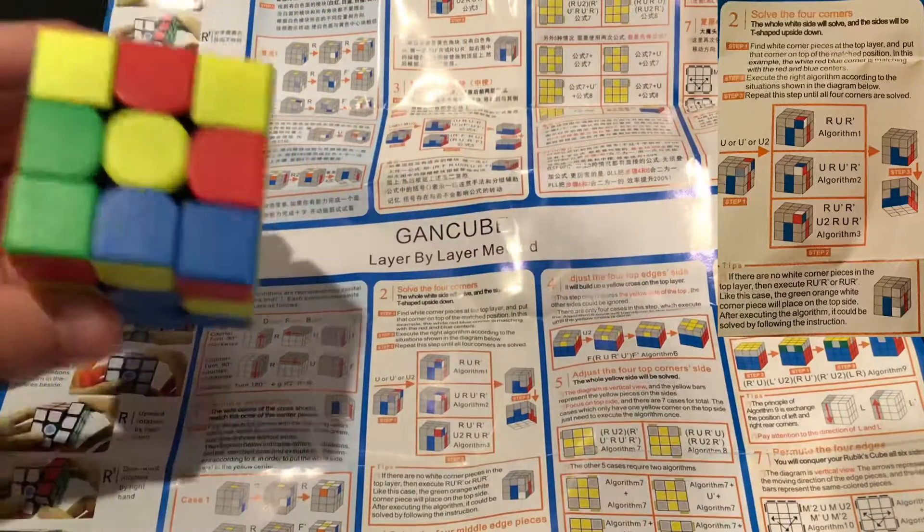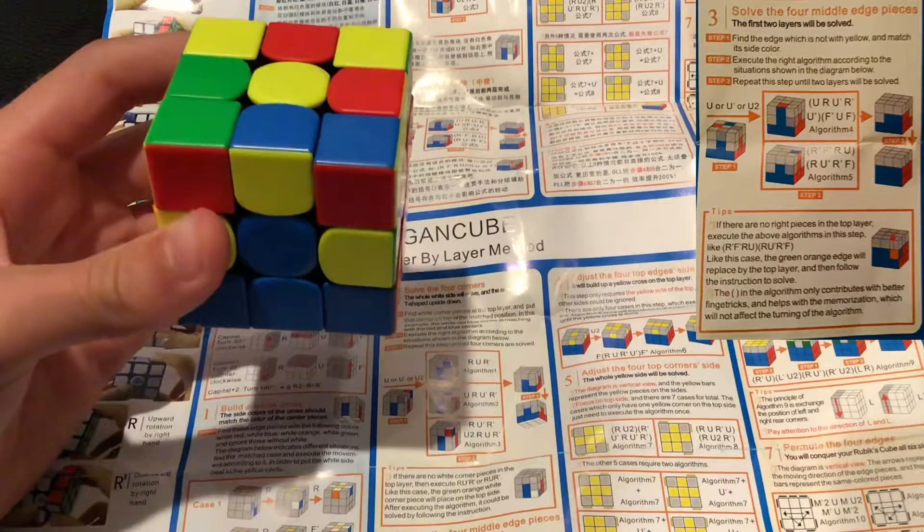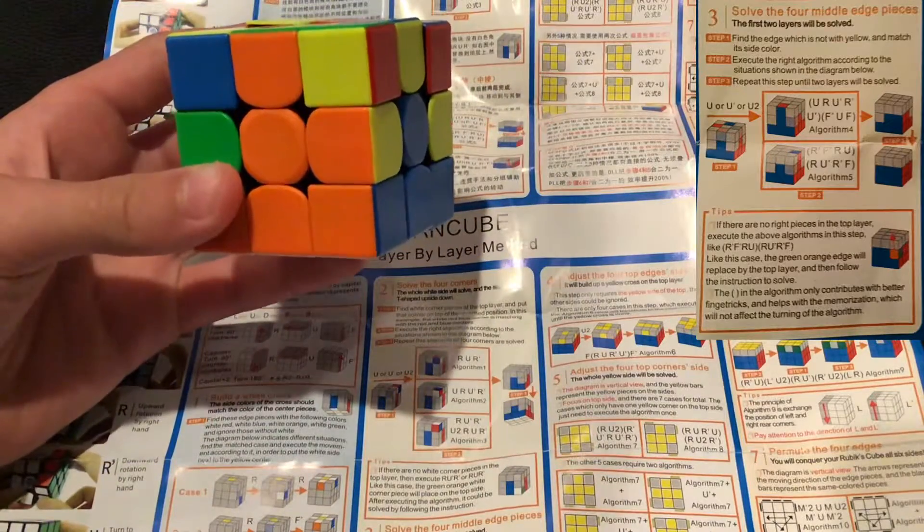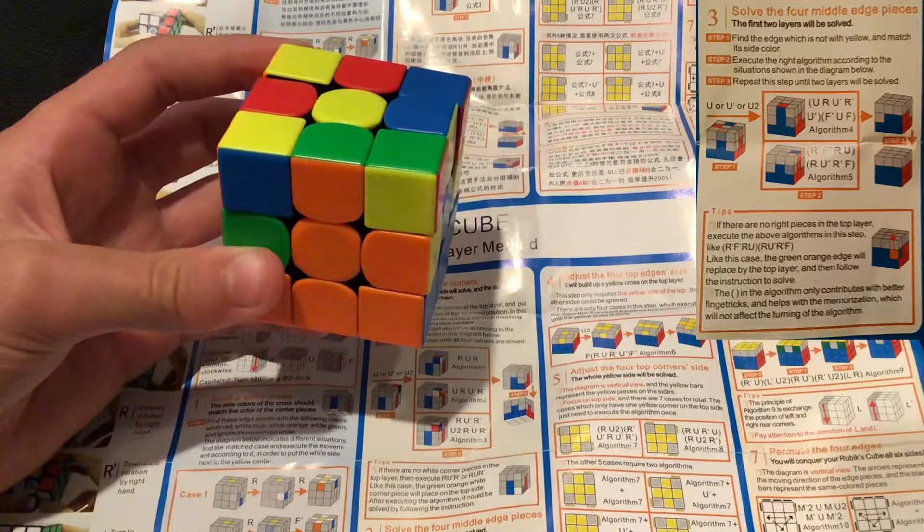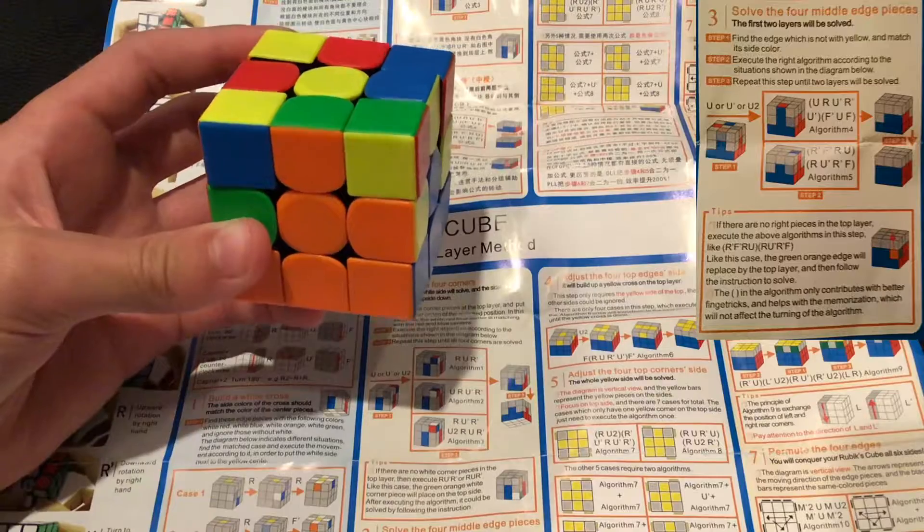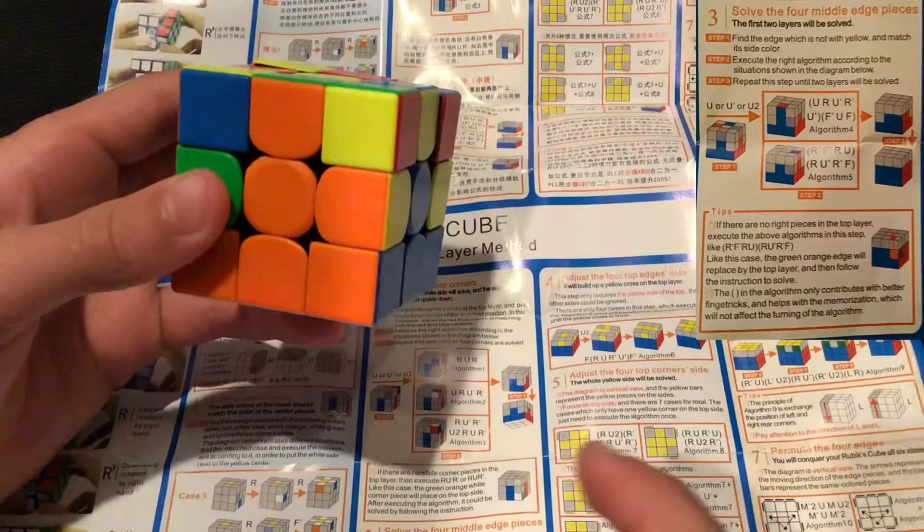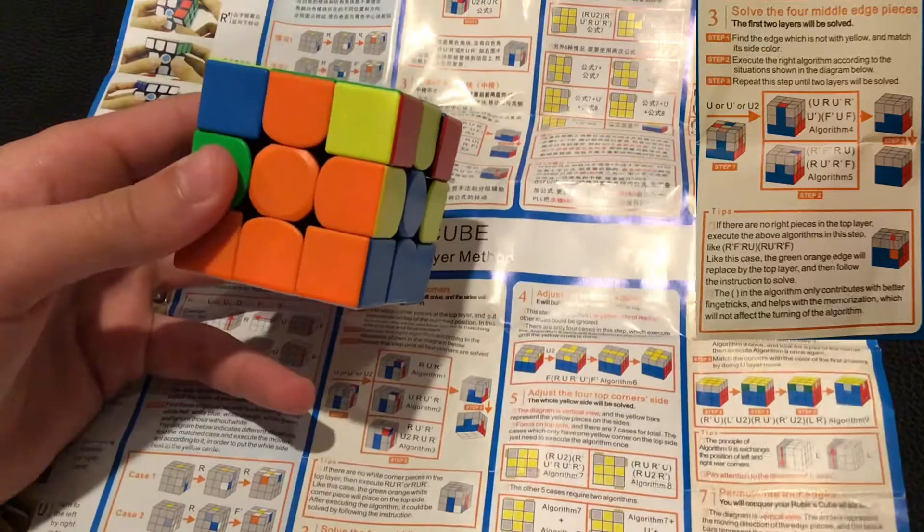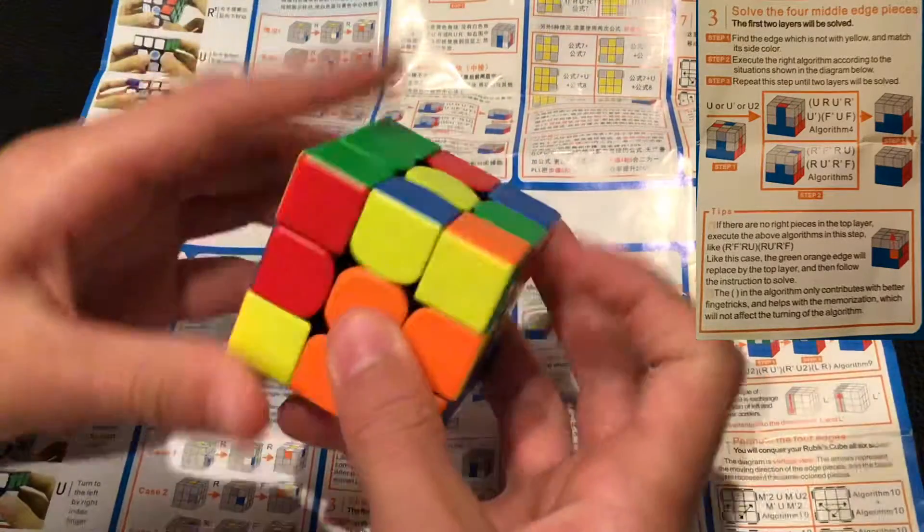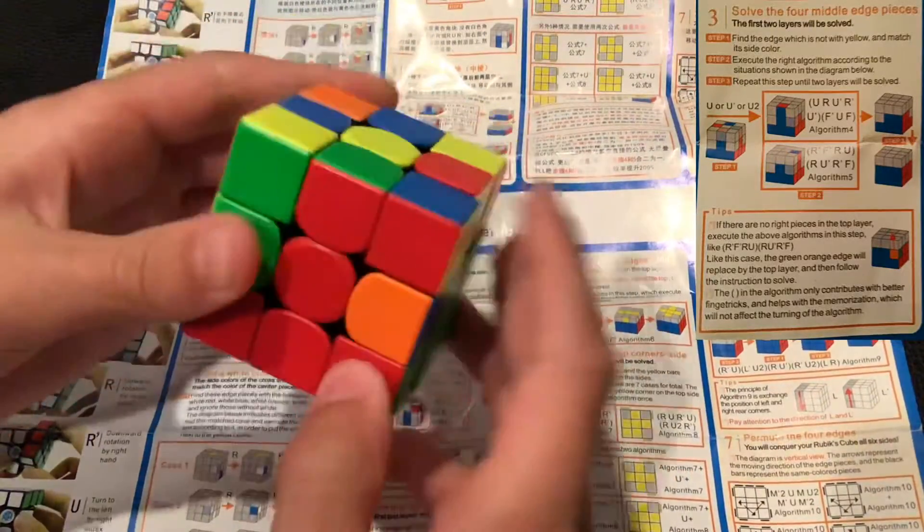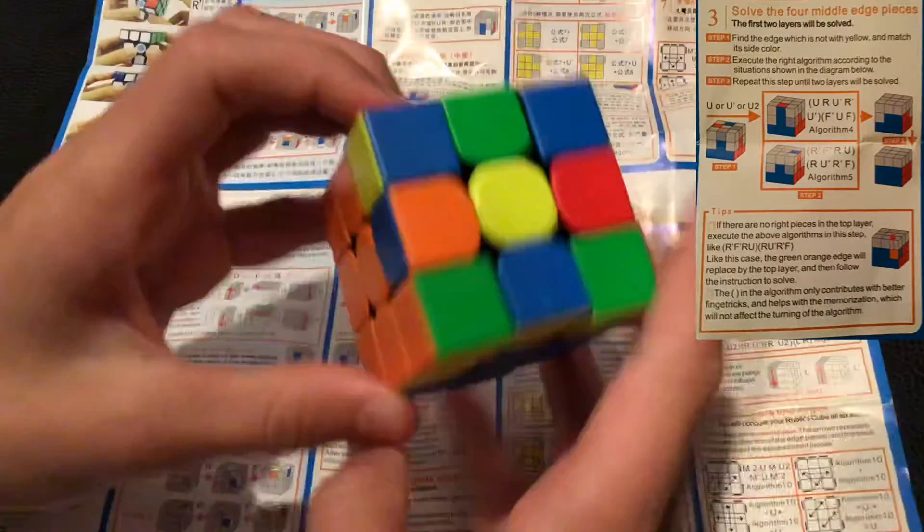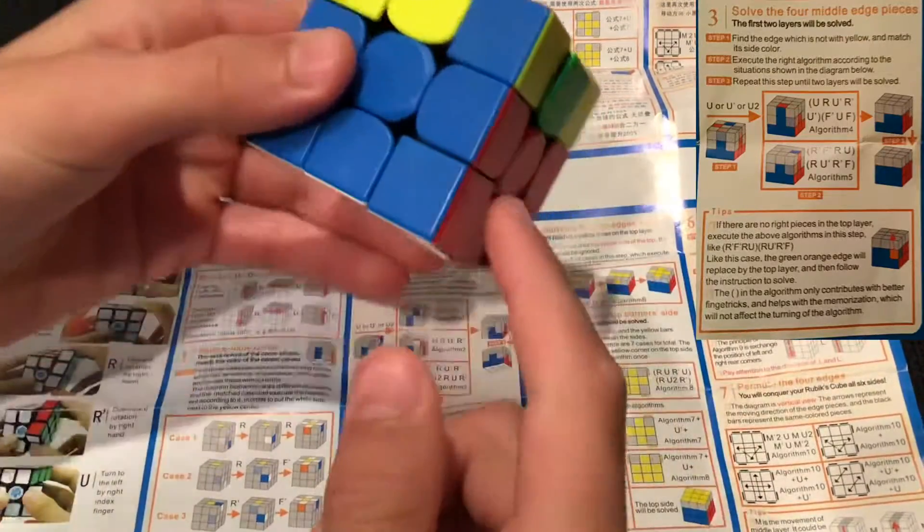So now the third step is to solve the four middle edge pieces. The first two layers will be solved. Find an edge which is not yellow and match its side color. So I have this one. Then I need to execute the right algorithm according to the situations shown in the diagram below. Repeat this step until two layers will be solved. So I have this one. And that's basically the beginner method. Insert each edge into its spot. I'm going to do algorithm five. So I'm going to put this one in. Normally when I do that, I do a cube rotation. Now I have this one. I already know these algorithms, so I don't have to look at the sheet. And then my last one is right here. All right, so I have my second layer done.